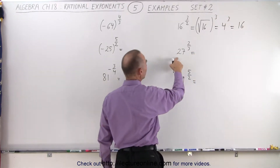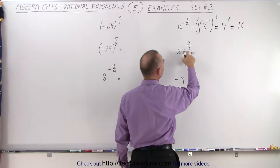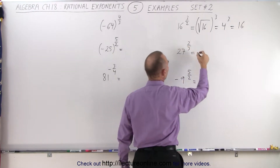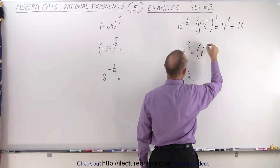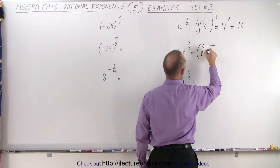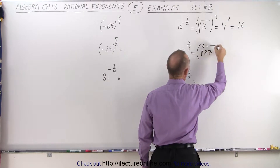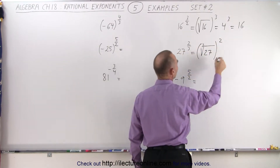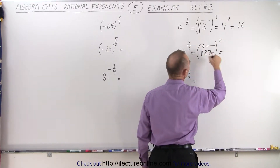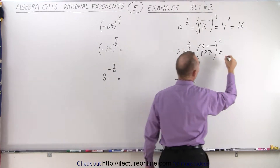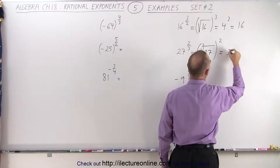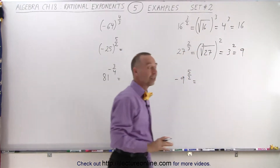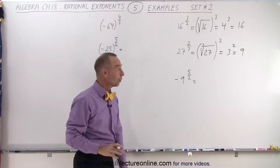Here we do the same thing. We have the cube root and we have the quantity squared. So we take the cube root of 27 and the whole thing is squared, because that's what the numerator is. The cube root of 27 is equal to 3, and 3 squared is equal to 9. So that's pretty straightforward.